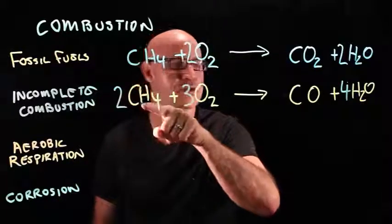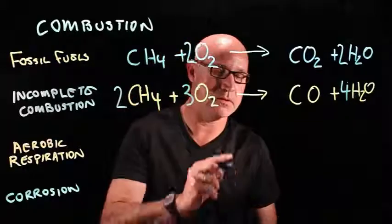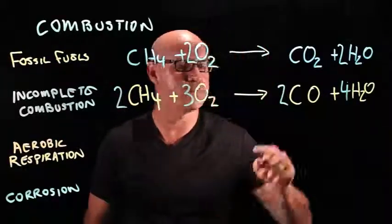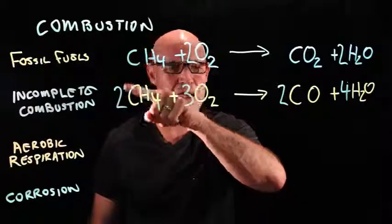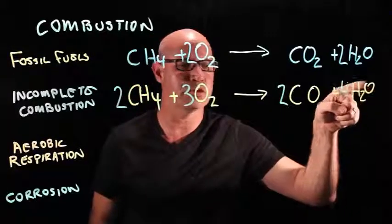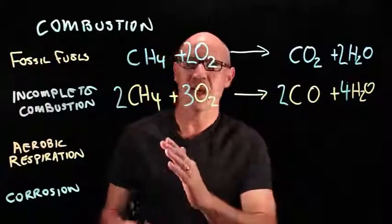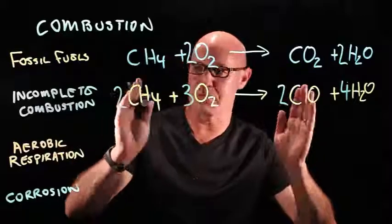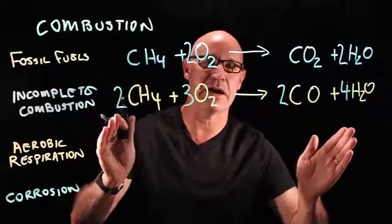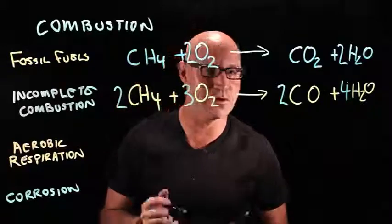So we've got eight hydrogens, eight hydrogens. But now we've got two carbons. So I've put a two here, two carbon, two carbon, eight hydrogen, eight hydrogen. Now let's have a look at our oxygen. Four oxygen, six oxygen, six oxygen. That was a hard equation to balance. It's harder than you'll need to do this year. So thanks for persevering with me.